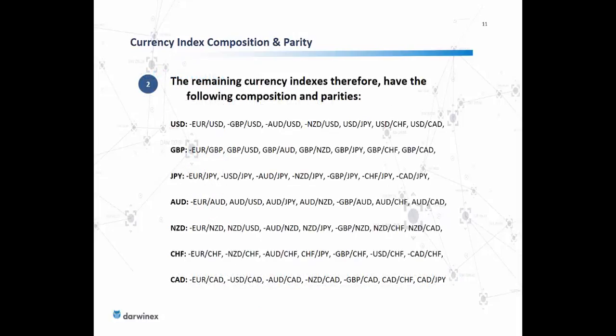The remaining currency indexes follow these same rules: the basket must contain all eight major currencies, and parities must be set so that the main index currency is effectively the base component. If a pair is included where the index currency is not the base, you negate the parity accordingly. I've outlined here what those indexes look like in terms of their composition and parities — a minus or plus indicating how you treat each asset given whether the main component, for example USD, sits in the base or quote position.